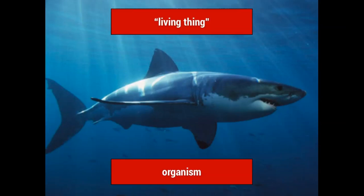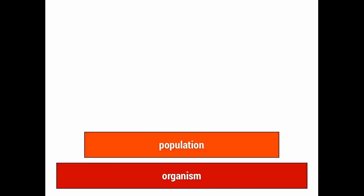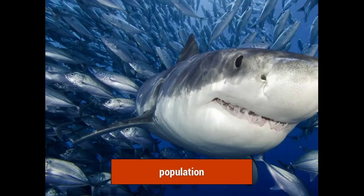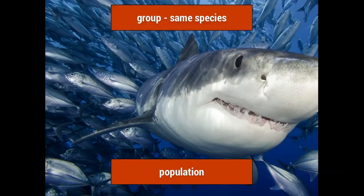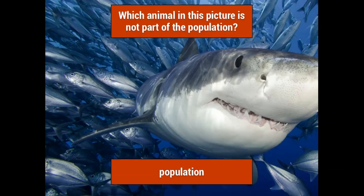Just above the organism is a population. A population is a group of animals that are of the same species. So we could ask the question, which animal in this picture is not part of the population? The shark, obviously, is the animal that does not belong in this picture.